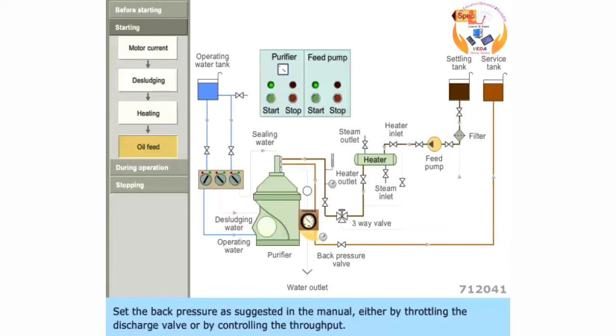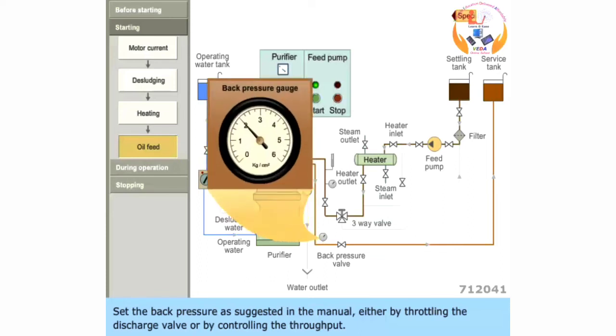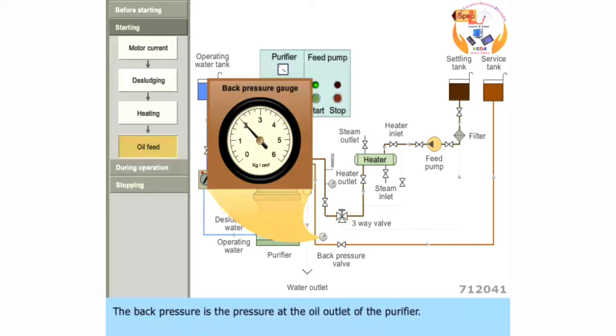Set the back pressure as suggested in the manual either by throttling the discharge valve or by controlling the throughput. The back pressure is the pressure at the oil outlet of the purifier. Back pressure is essential for proper pumping of oil to the service tank and maintaining the water seal.